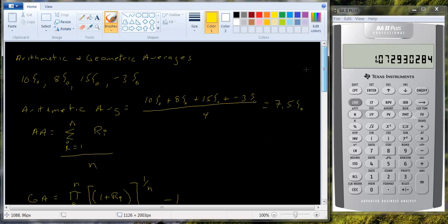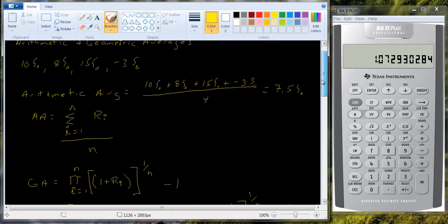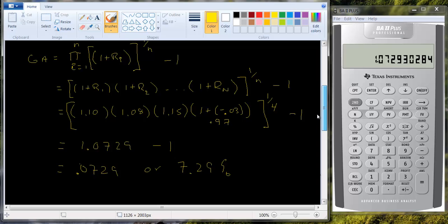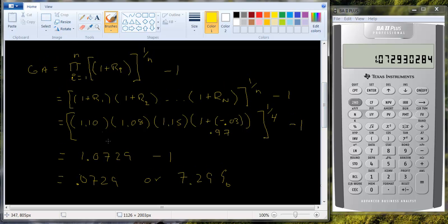So if you're interested in knowing what was your average return over the period, arithmetic average is the way to go. If you want to know what your average compound return was, then you want to use the geometric average.